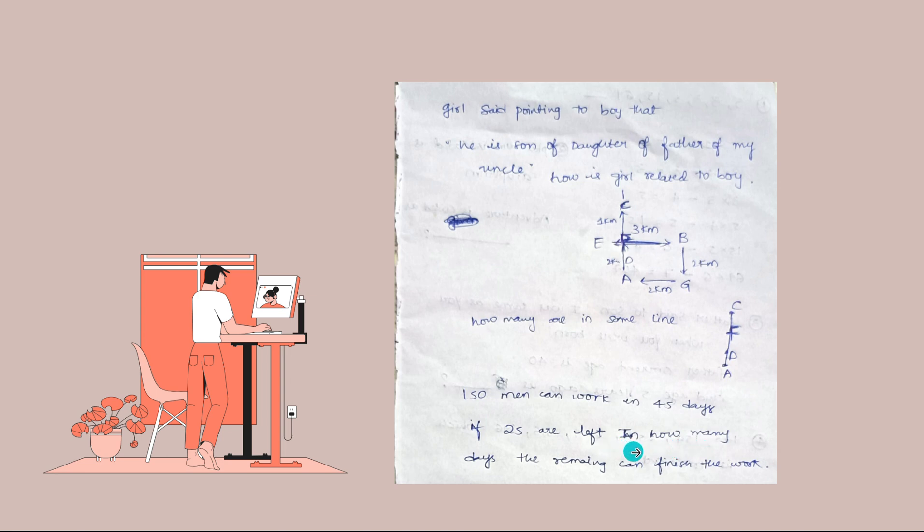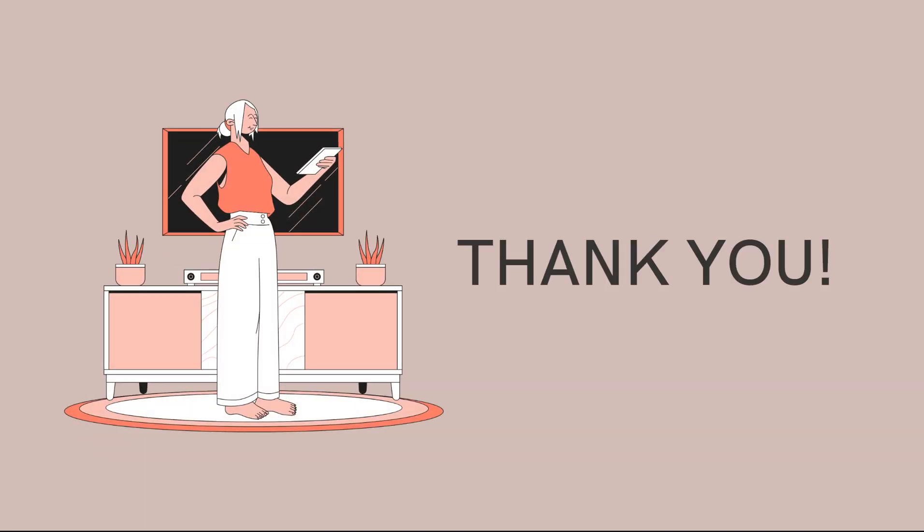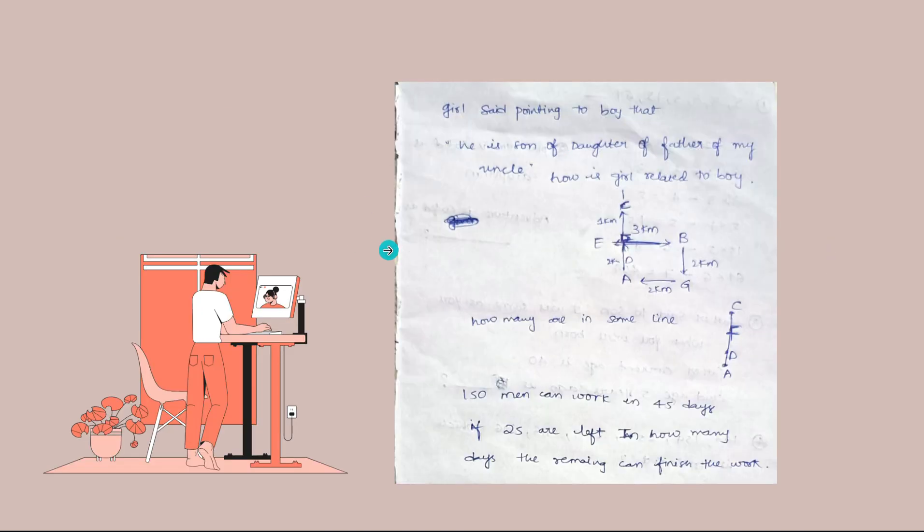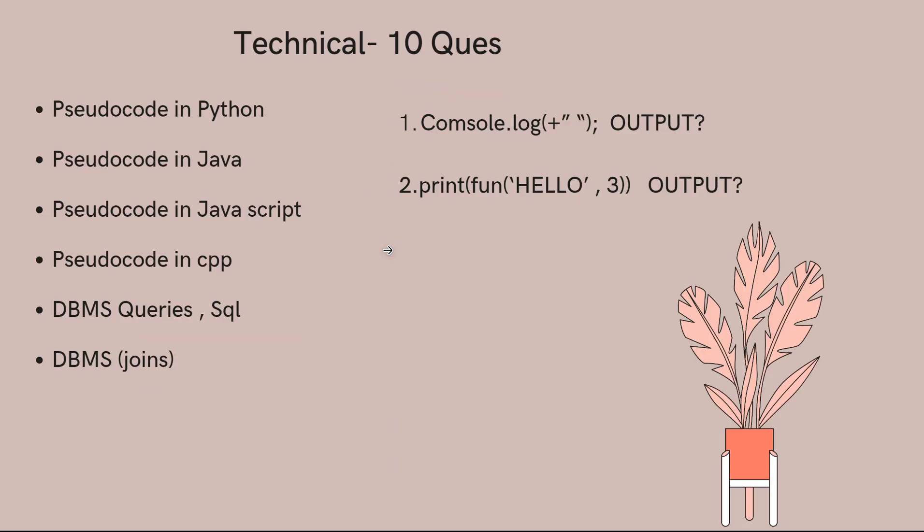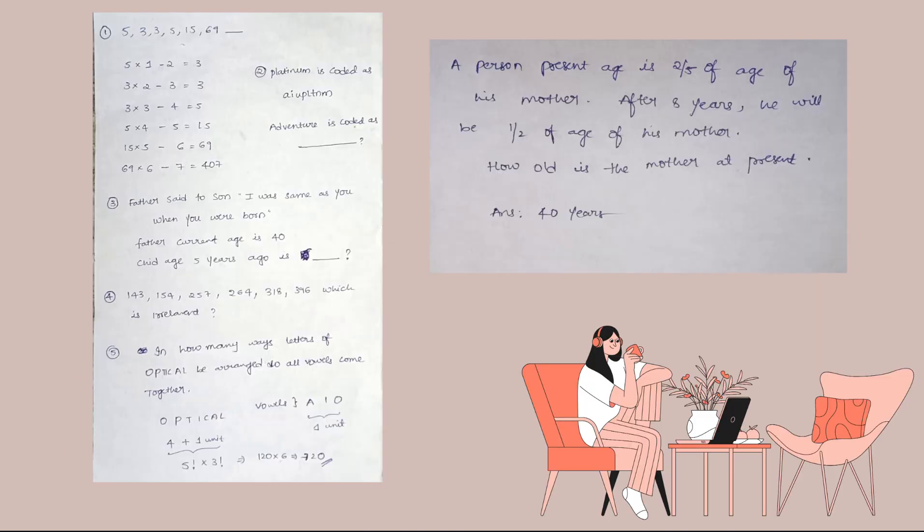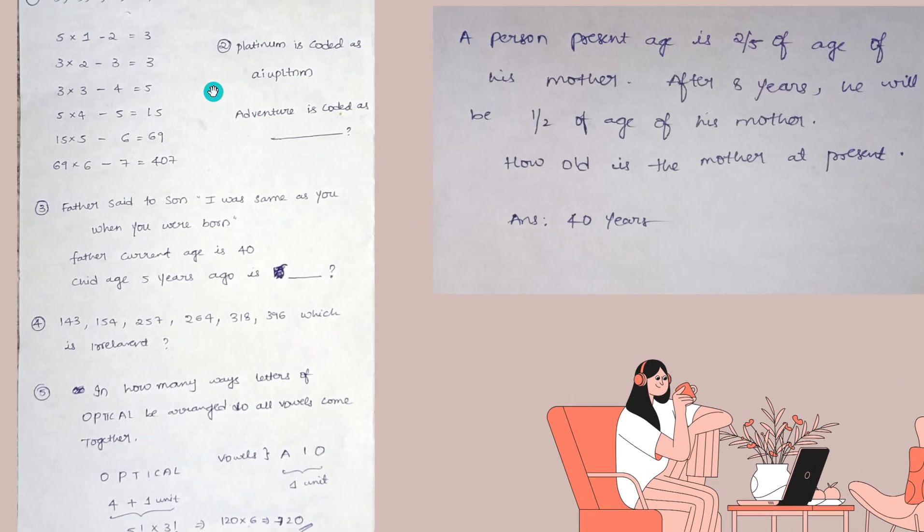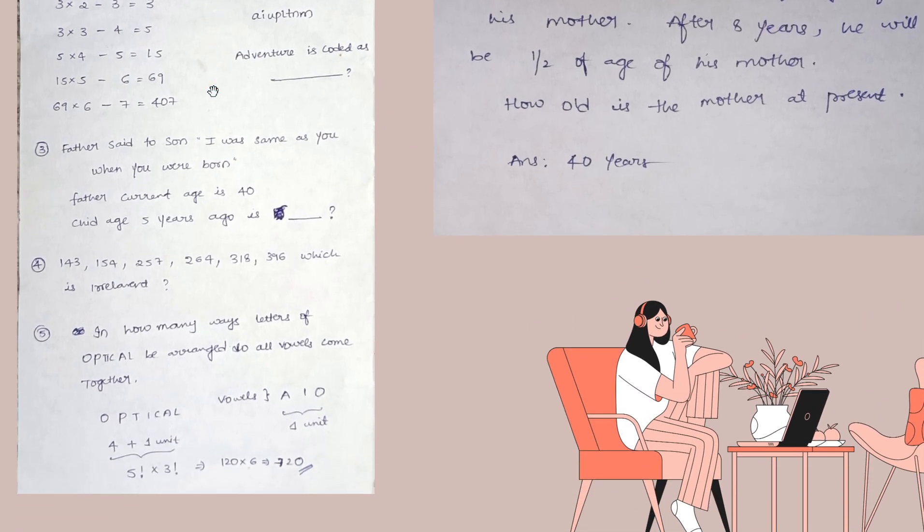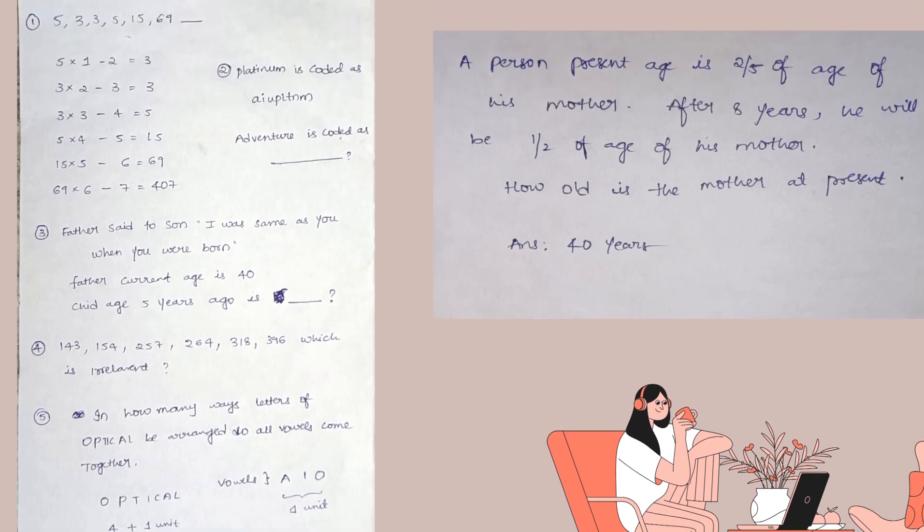Then the question is: 150 men can work in 45 days. If 25 are left, in how many days can the remaining people finish the work? That is the question. Have a screenshot, give it to ChatGPT, it can answer you well. Have a screenshot or pause the video and try to solve it.